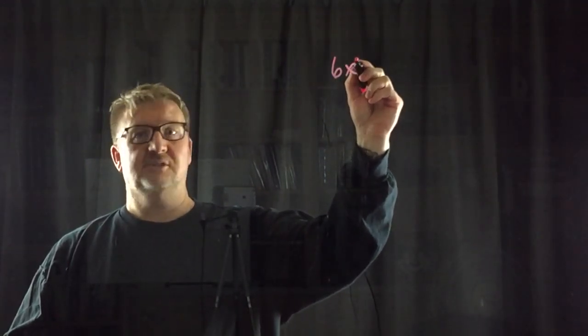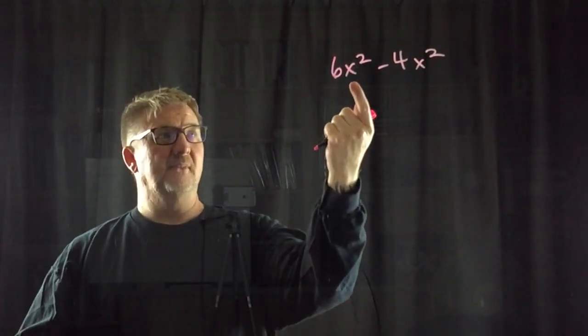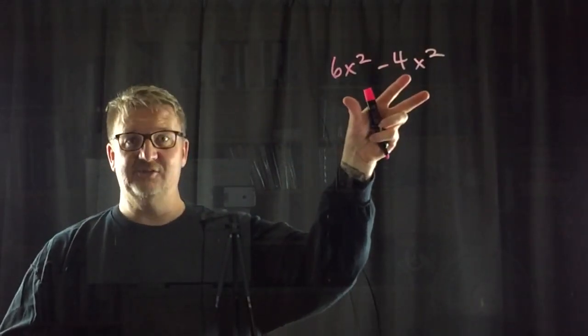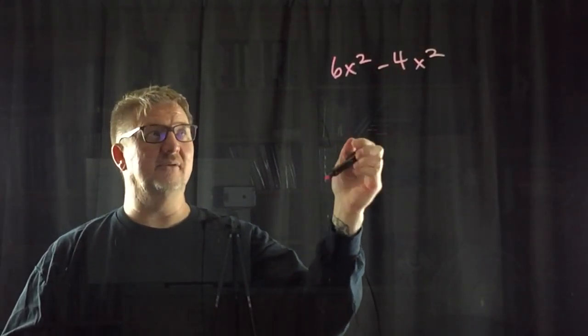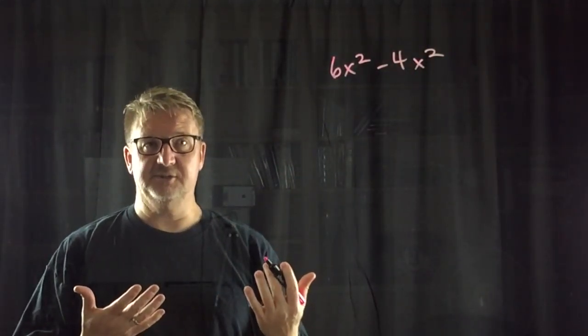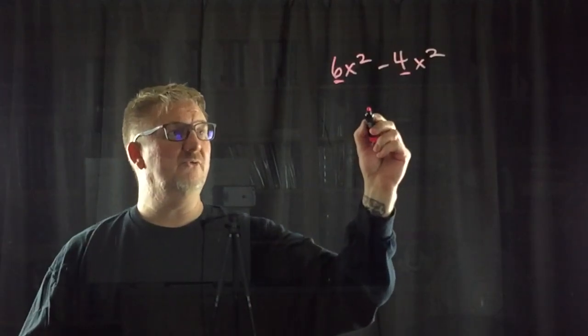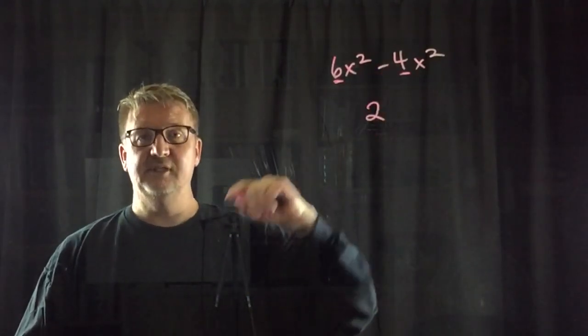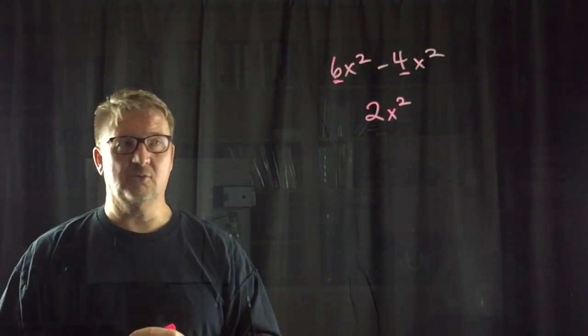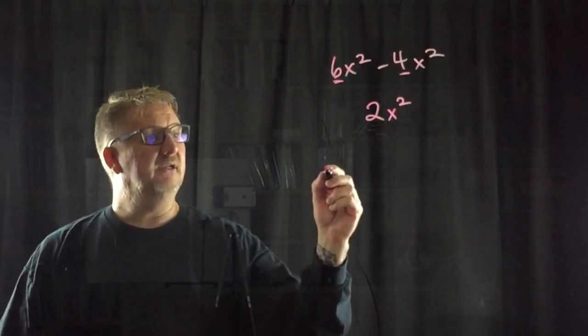So I have 6x squared minus 4x squared. Okay? So I have an x. I have an x. That x is raised to the second power. That x is raised to the second power. These are like terms. I can combine them. Okay? So basically, I have 6x squared and I'm taking away 4x squared. So really, all I have to do is worry about that coefficient and subtract the coefficient. 6 minus 4 is 2. But I can't drop the x squared because that's part of the term. So my answer there is 2x squared. That is as simple as it gets. I don't know what x is, so I can't evaluate it.